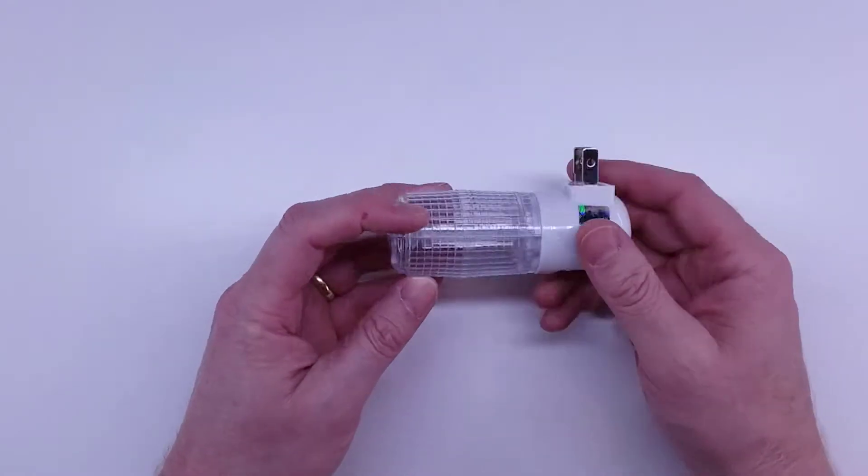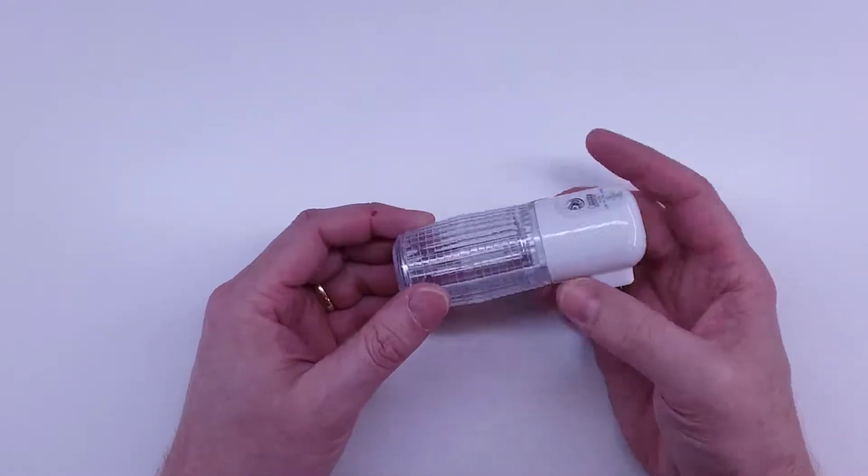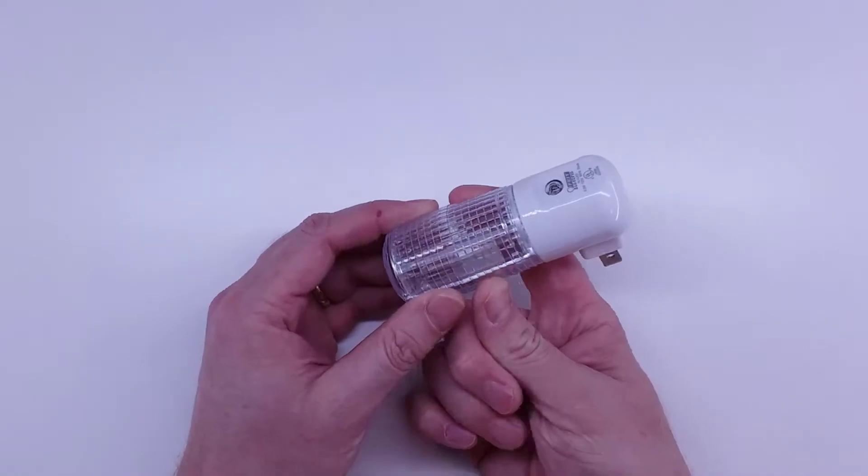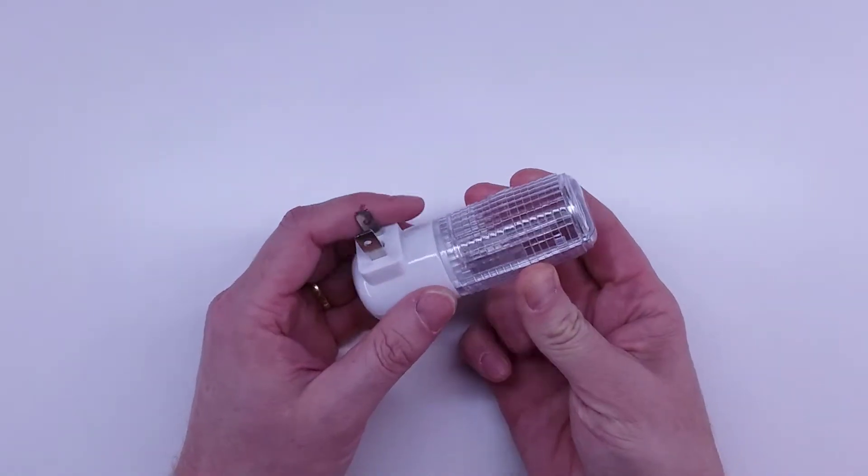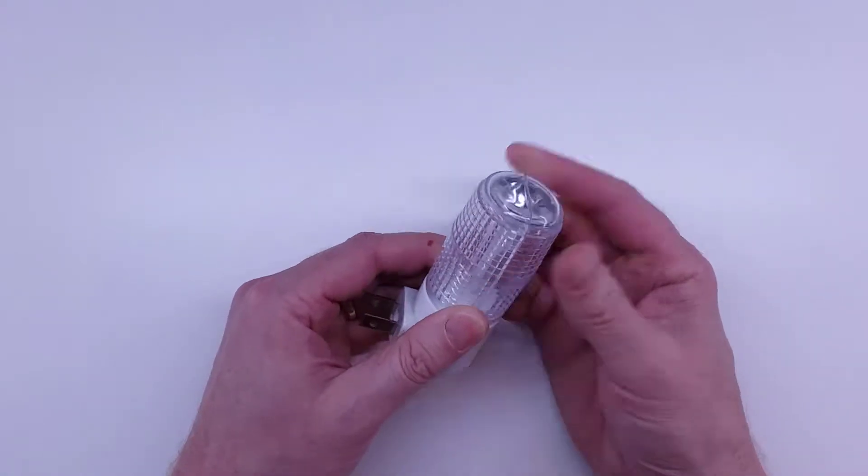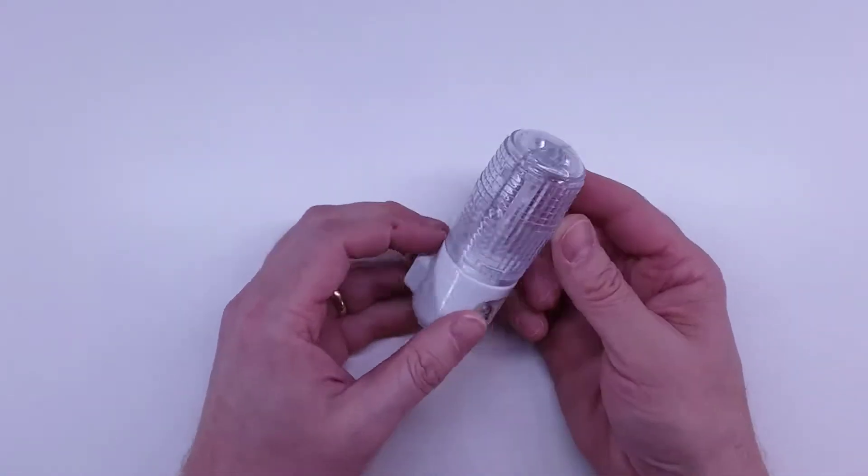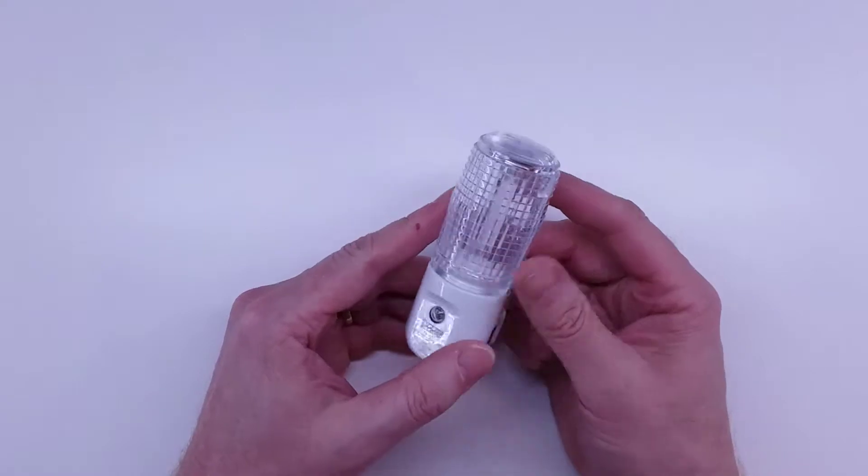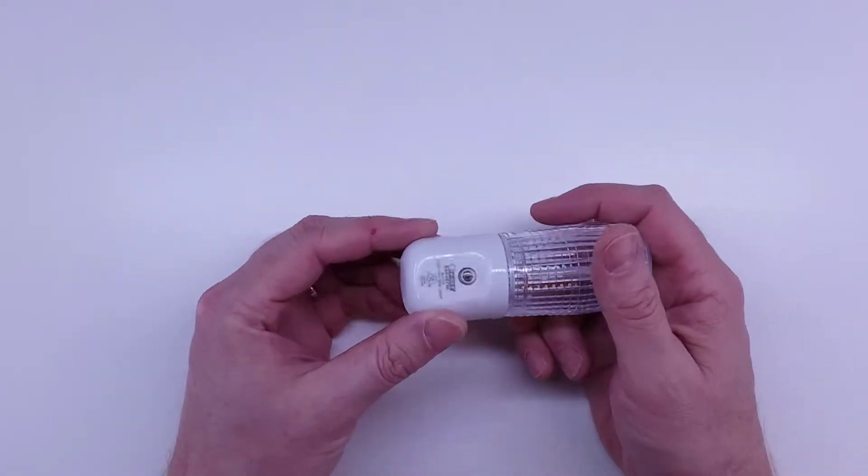The trick to getting these apart is to put this in a vice and then just slowly increase the pressure, then flip it around and do the same thing. Eventually that will pop the seal open and we'll be able to get it apart. It will snap back together pretty hard, so I'm gonna go ahead and get this apart.